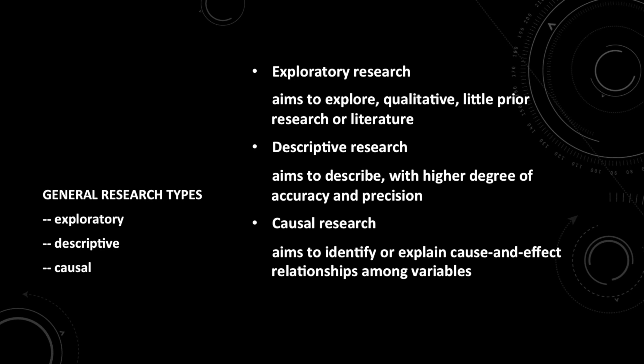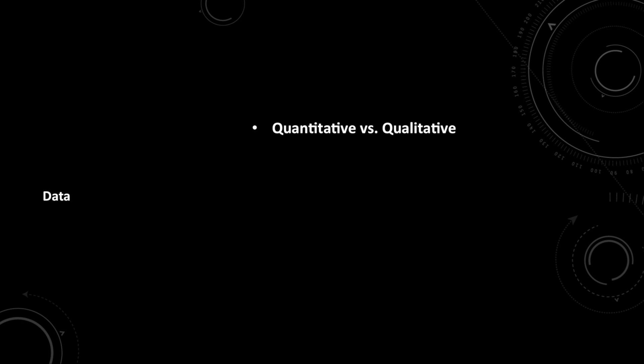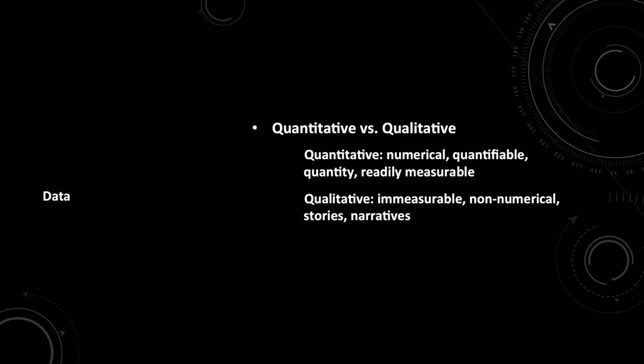You also need to indicate in your assignment which type of data you intend to collect, qualitative or quantitative. Let's quickly recap what they are. We already discussed qualitative versus quantitative data in the research module of year one, so we can quickly fly through this slide. Essentially, quantitative data are quantifiable, numerical, statistical type of information. They deal with the quantity of something, and they are readily measurable. Qualitative data, on the other hand, is pretty much the opposite. They deal with things that are not readily measurable or quantifiable. They are non-numerical. They are generated and collected in the form of stories, narratives, sometimes even images or videos or drawings or whatever form that is not numerical or statistical.